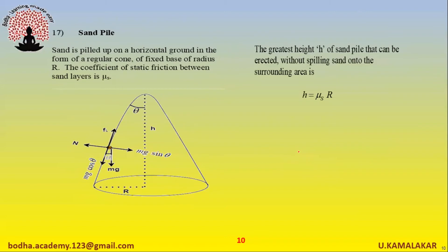Sand is piled up on horizontal ground in the form of a regular cone of fixed base radius r. The coefficient of static friction between sand layers is mu_s. The greatest height h of sand pile that can be erected without spilling sand onto the surrounding area is: h equals mu_s times r.